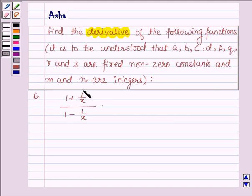Sixth one is 1 plus 1 upon X upon 1 minus 1 upon X. Let's start with the solution.